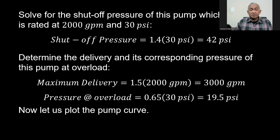We determine the delivery and corresponding pressure of this pump at overload. Maximum delivery is 1.5 times the rated delivery: 1.5 × 2,000 GPM = 3,000 GPM. Pressure at overload is 0.65 times the rated PSI: 0.65 × 30 = 19.5 PSI.